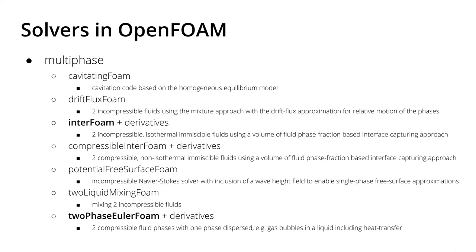There is also potentialFreeSurfaceFoam for the incompressible Navier-Stokes equations with inclusion of a wave height field, and twoLiquidMixingFoam for the mixing of two incompressible fluids. Another important and common solver is twoPhaseEulerFoam — and its derivative — for the solution of two compressible fluid phases with one phase dispersed, for example gas bubbles in a liquid. For calculating a bubble column, interFoam would require a very high mesh resolution, so people typically use twoPhaseEulerFoam instead.